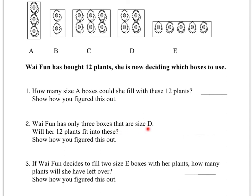Wai Fun has only 3 boxes that are size D. Will her 12 plants fit into these? Well, size D is 4 plants per box. So if she has 3 of those boxes that hold 4 plants per box, we're going to have to multiply the number of boxes she has times the number of plants each box holds to know how many plants total she can hold with all of these. And you use that to figure out if it will hold all 12 of her plants. You show that through multiplication here.